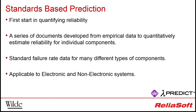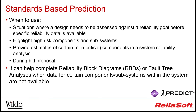In the absence of specific life data, it is possible to refer to a number of prediction standards that have been developed for generic components from both military and commercial field data. This data has been gathered empirically over a good number of years for both electronic and non-electronic systems, although it usually works best for electronic components such as transistors, capacitors, resistors and relays. Standards-based prediction can be used effectively in the early stages of the design process when specific component choice is not yet available, to give an indication of the plausibility of a project. High-risk components and subsystems can be identified early, and then this can also be used to complete system-level RBDs or fault trees to give us the system-level view.